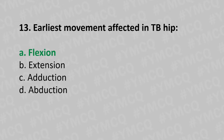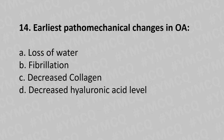Moving to our 14th question: the earliest pathomechanical change in osteoarthritis is — option A loss of water, option B fibrillation, option C increased collagen, option D decreased hyaluronic acid level. And the answer is option B fibrillation.